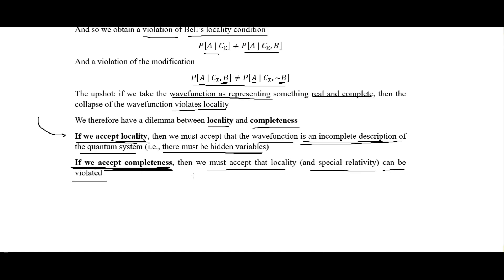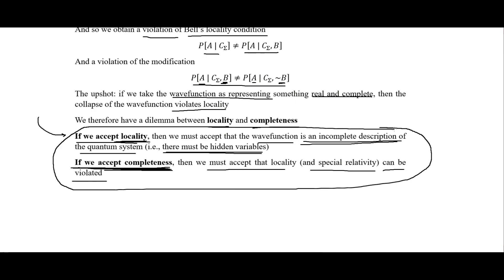Accepting completeness means we have to say that locality can be violated — that it's possible to violate locality and special relativity in these cases of quantum mechanics. Einstein was often misinterpreted by his opponents, including Niels Bohr, who thought Einstein's problem had more to do with Heisenberg's uncertainty principle. But the big concern for both Einstein and Schrödinger was this dilemma between locality and completeness, where they were proponents of accepting locality and therefore saying quantum mechanics was incomplete. I hope you found this video interesting and I will see you in the next one.